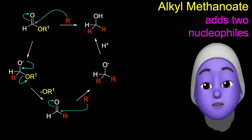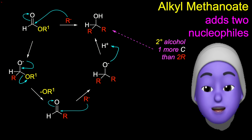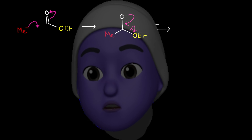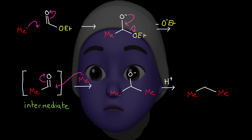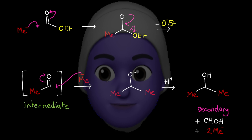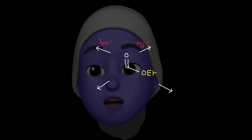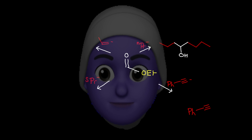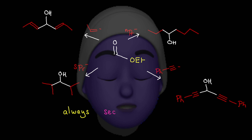Addition of a proton source, when the reaction is complete, gives a secondary alcohol with one CHOH — that's a hydroxymethylene group — and two R fragments. Addition of methyl minus to ethyl methanoate gives an ethanol intermediate, and then 2-propanol.